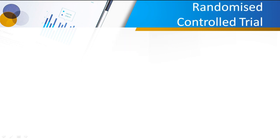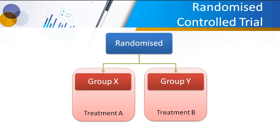Something more complicated is called a randomised control trial. We have exactly the same situation as parallel group where group X get treatment A and group Y get treatment B, but the difference here is group X don't get treatment A — instead they get a control, a placebo. And this is why it's called a randomised control trial: you're comparing a treatment with a control.